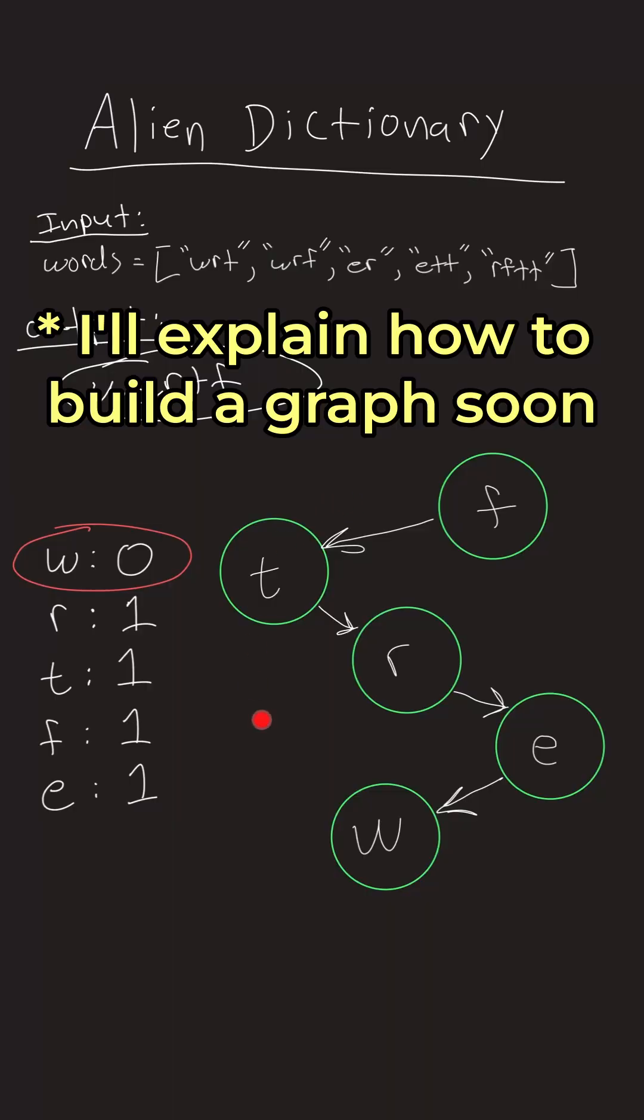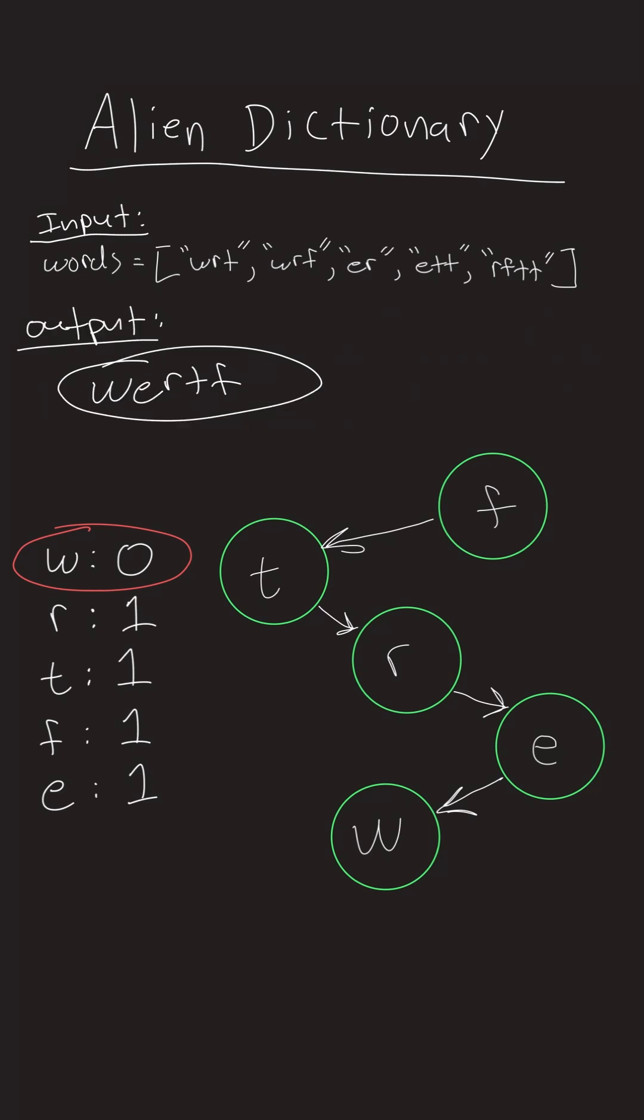First, build up a graph where each node is a character, and each directed edge represents the order of the characters based on the given words. For example, if wrt appears before wrf, we know t comes before f.